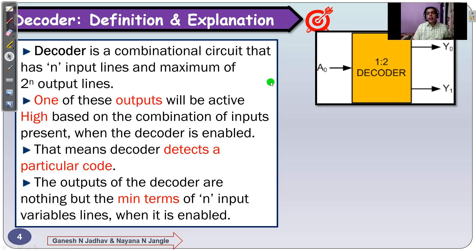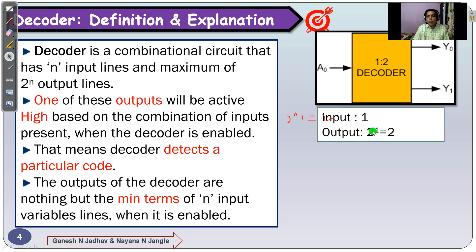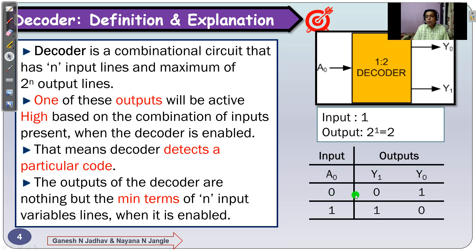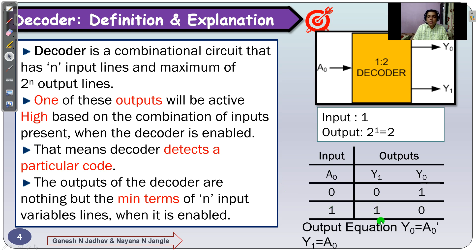First, let's see the simplest decoder — the 1-to-2 decoder. The input line is 1, so 2 raised to 1 gives 2 output lines. When input A0 equals 0, Y0 will be equal to 1 and Y1 equals 0. When A0 equals 1, Y1 equals 1 and Y0 equals 0. It decodes the binary into the corresponding output. The output equation for Y0 equals A0-dash, and for Y1 equals A0.